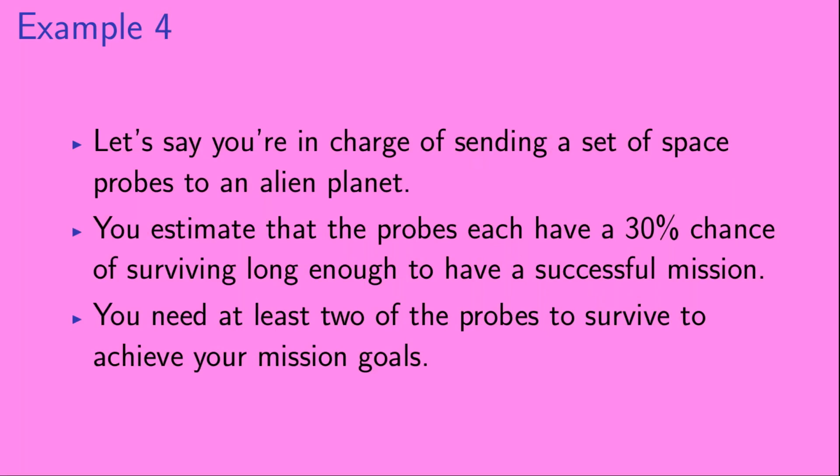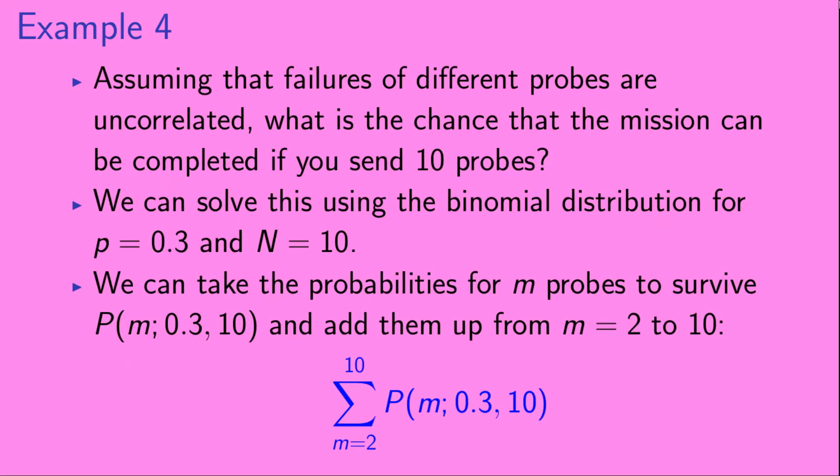Example 4. Let's say you're in charge of sending a set of space probes to an alien planet. You estimate that the probes each have a 30% chance of surviving long enough to have a successful mission. You need at least two of the probes to survive to achieve your mission goals. Assuming that failures of different probes are uncorrelated, what is the chance that the mission can be completed if you send 10 probes? We can solve this using the binomial distribution for p equals 0.3 and n equals 10. We can take the probabilities for m probes to survive and add up those probabilities from m equals 2 to m equals 10, as is shown here.